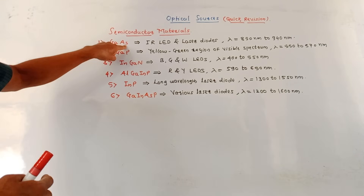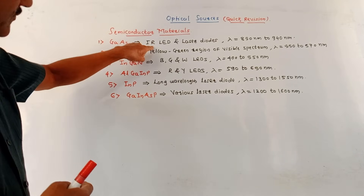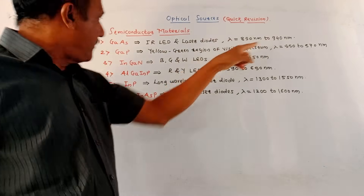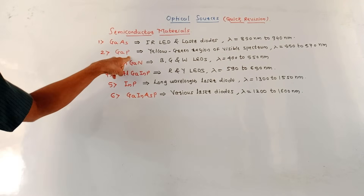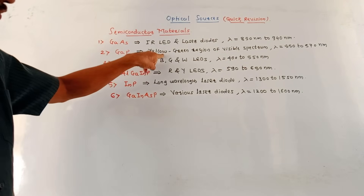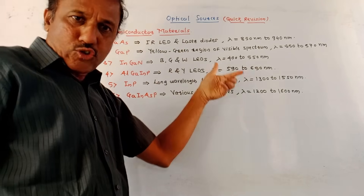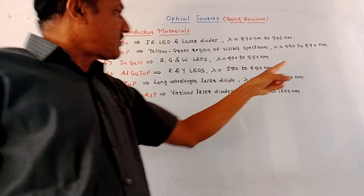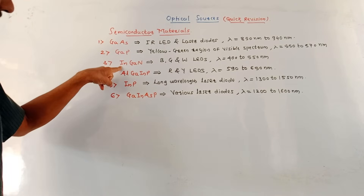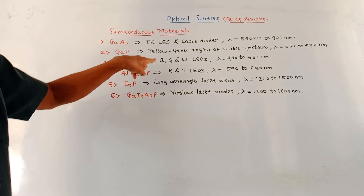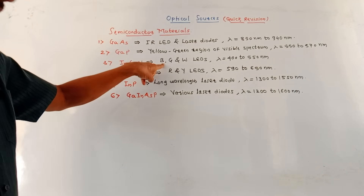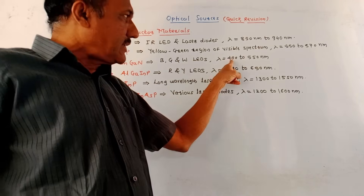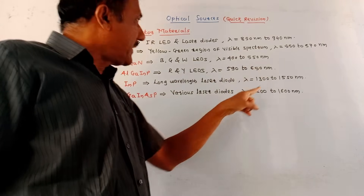First is gallium arsenide — it is used in infrared LED and laser diode, wavelength range 850 to 940 nanometers. Second is gallium phosphide — it is used for yellow and green regions of the visible spectrum, wavelength range 550 to 570 nanometers. Next is indium phosphide — it is used for blue, green and white LEDs, wavelength range 400 to 550 nanometers.